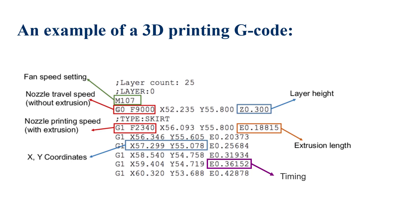In this slide, you can see M107. M refers to fan speed setting. In each line, you can see G, and G0 or G1. G0 refers to the nozzle state. State 0 shows there isn't any deposition or extrusion happening. G1 shows there is printing.